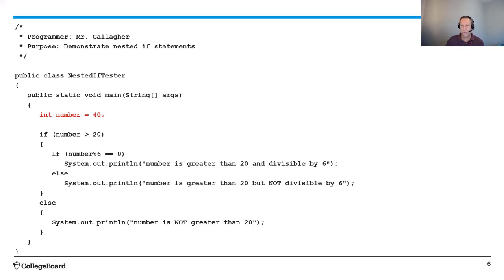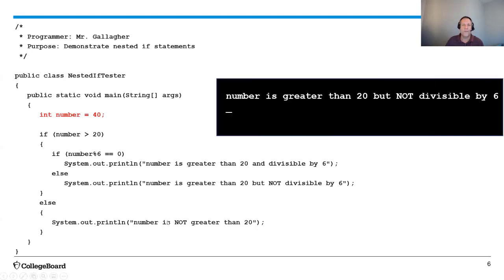What if I change the number to 40? Well, same situation. I'm going to see is my number greater than 20? It is. So I'm going to go inside again to the second if statement. But here, number 40 is not divisible by six. So it's going to skip over this if and go to the else associated with it. And it's going to go to the print line and print out that number is greater than 20, but not divisible by six.